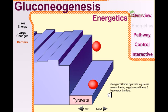To go from pyruvate to glucose, we need to overcome three large energy barriers. To overcome these three barriers, we must have energy input from outside.